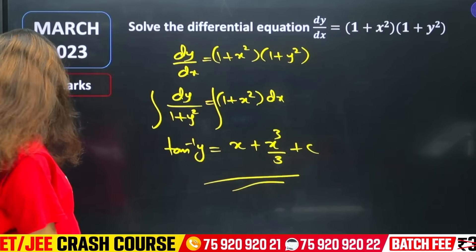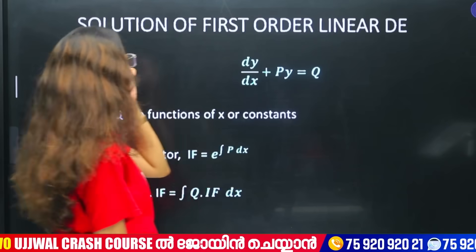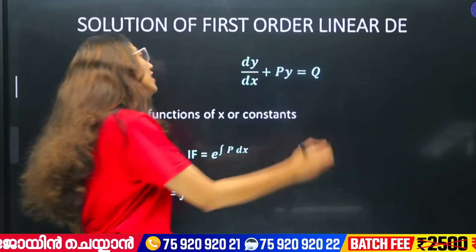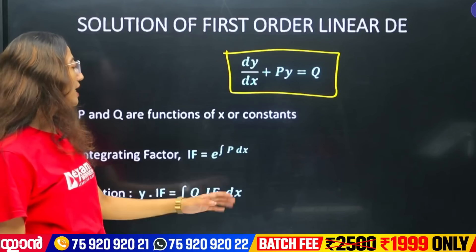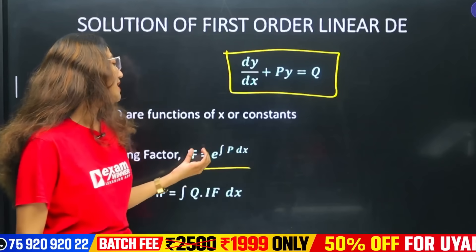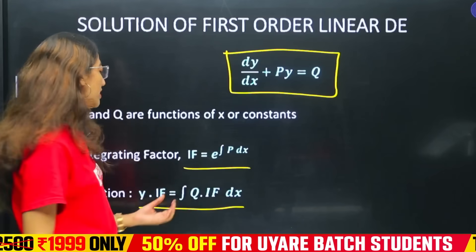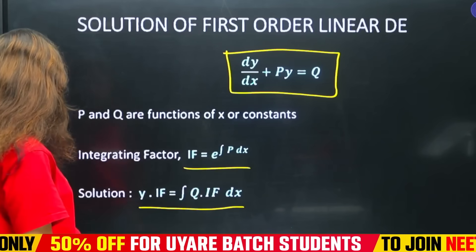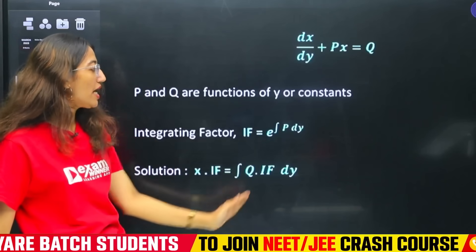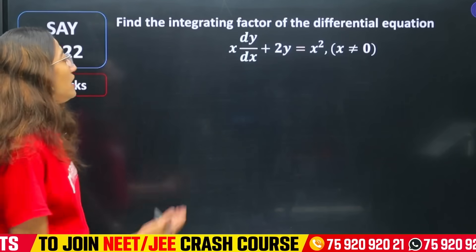For the first order linear differential equation, the standard form is dy/dx + Py = Q. We need to find the integrating factor. The integrating factor is e raised to the integral of P dx. The solution is then: y × (integrating factor) = ∫Q × (integrating factor) dx.